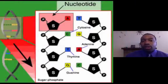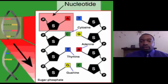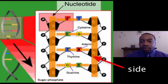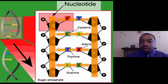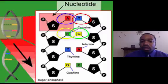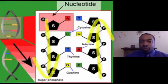So the double helix is basically the shape of a twisted ladder. We can see the sides of the ladder and we can see the rungs of the ladder. When we look at the rungs of the ladder, we see these four bases — the A, T, G's, and C's. And then when we look at the sides of the ladder, we see this alternating phosphate-sugar structure.